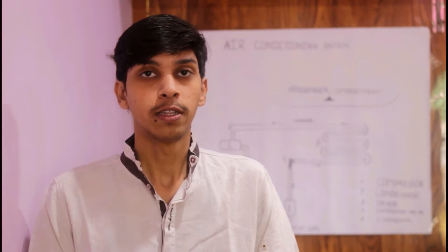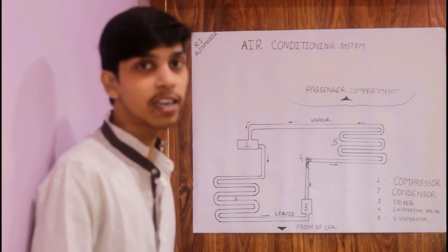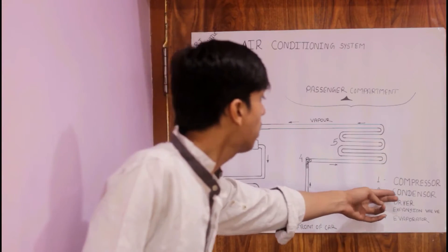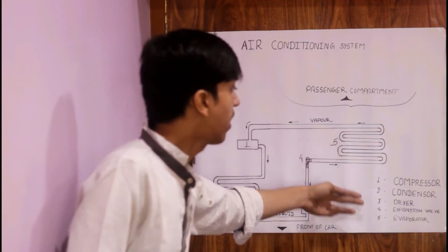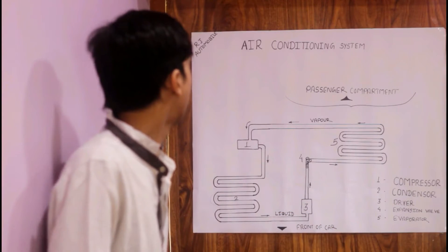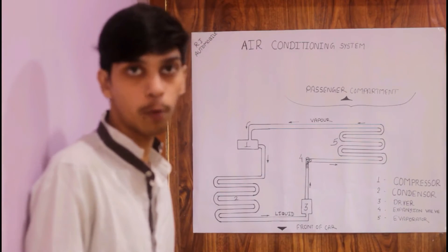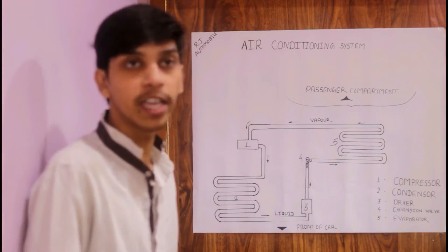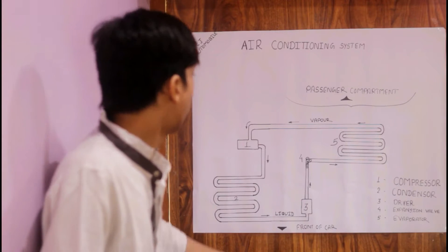Today we are going to discuss how the air conditioning system works and how the temperature is kept lower than the atmosphere. The air conditioning system basically consists of five parts: first is a compressor, second the condenser, third is a dryer, fourth is the expansion valve, and fifth is an evaporator. The core four parts are compressor, condenser, expansion valve, and evaporator, but nowadays the dryer is also used to increase efficiency.